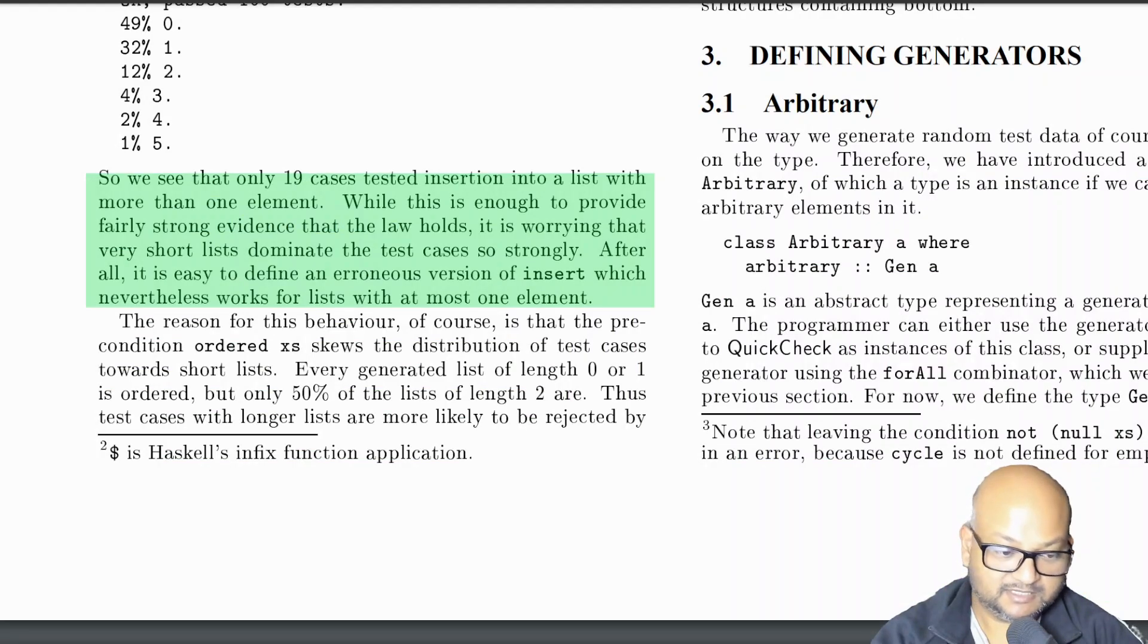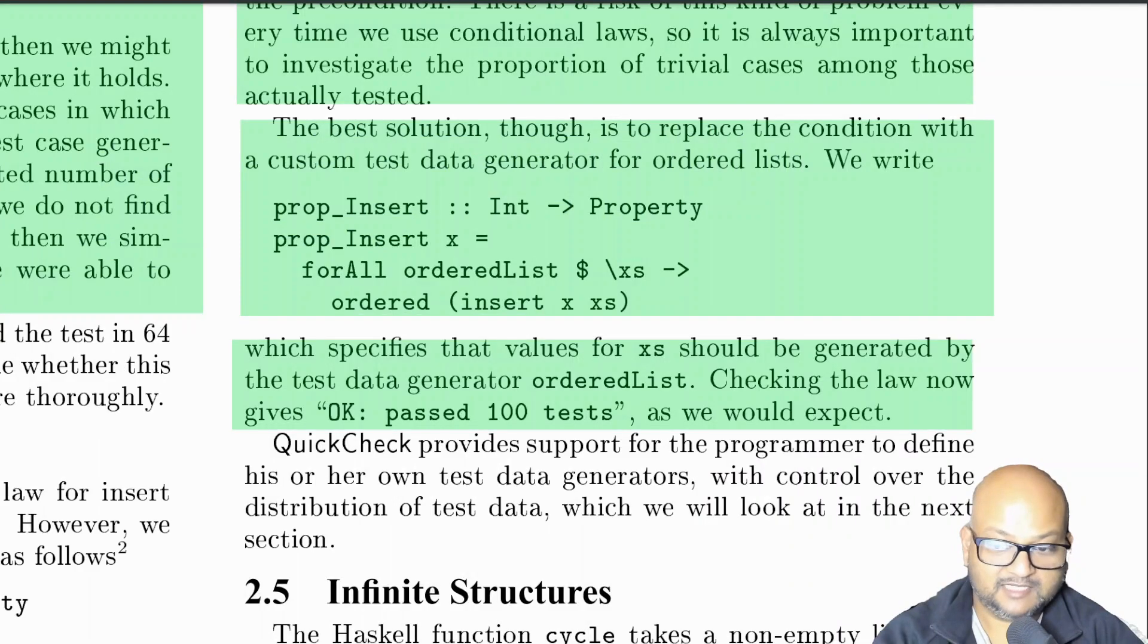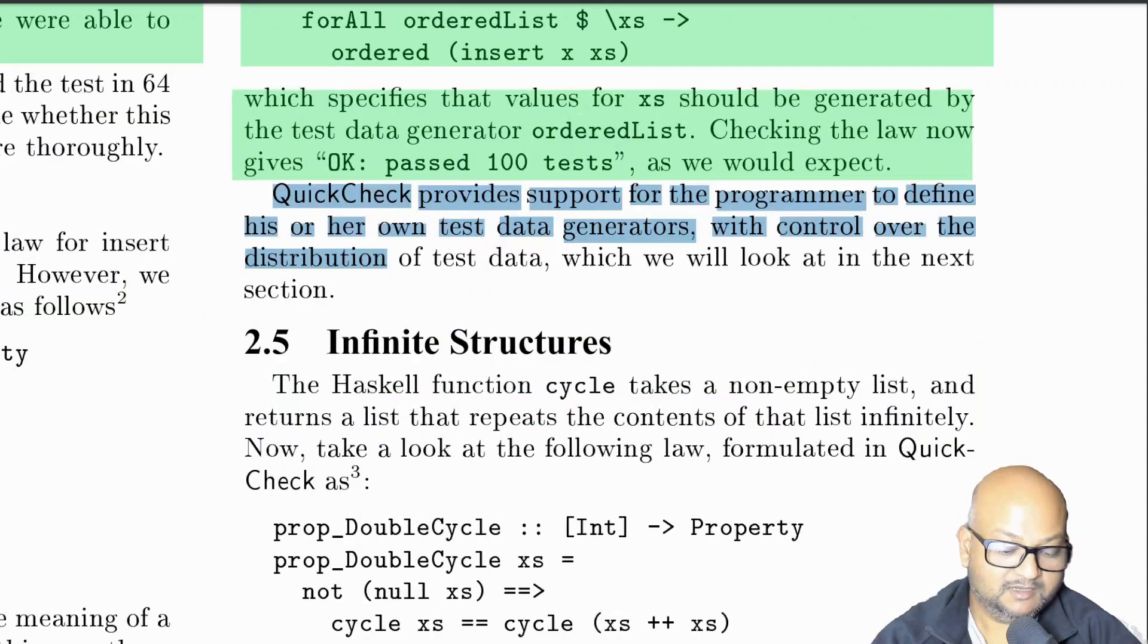But of course, even in these cases where there is a precondition on our property, we do want to ensure that we get good test coverage. And that is exactly the motivation for custom test data generators. For the example of insertion into an ordered list, we express that property like this. And what that is basically saying is that values for the input list should be generated by the test generator ordered list. And that test data generator is written by the programmer to explicitly generate random ordered lists. And QuickCheck comes packaged with a number of conveniences that make it very easy to write these custom test generators for simple types, and then also extend those to more complex user defined types.